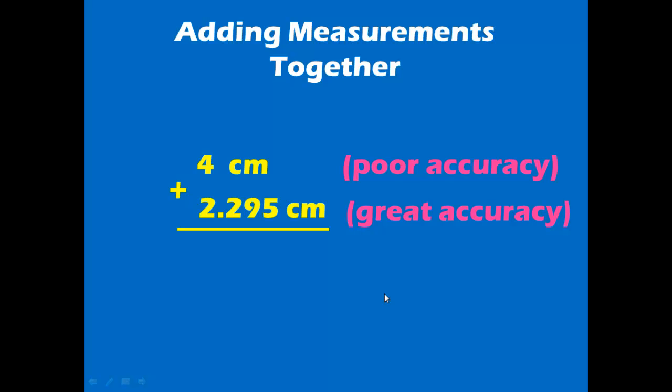What happens when you add measurements together that have different degrees of accuracy? For instance, if I take 4 centimeters, which we learned earlier from the ruler has very poor accuracy, and I try to add it to a value that has great accuracy, 2.295, what happens? Would you get an answer of 6.295 centimeters? The answer is no. When you take a value with very poor accuracy and add it to something with great accuracy, your answer cannot be more accurate than your least accurate value. In other words, our answer will only be 6 centimeters. We cannot have any decimals shown because our first value did not have any decimals shown.